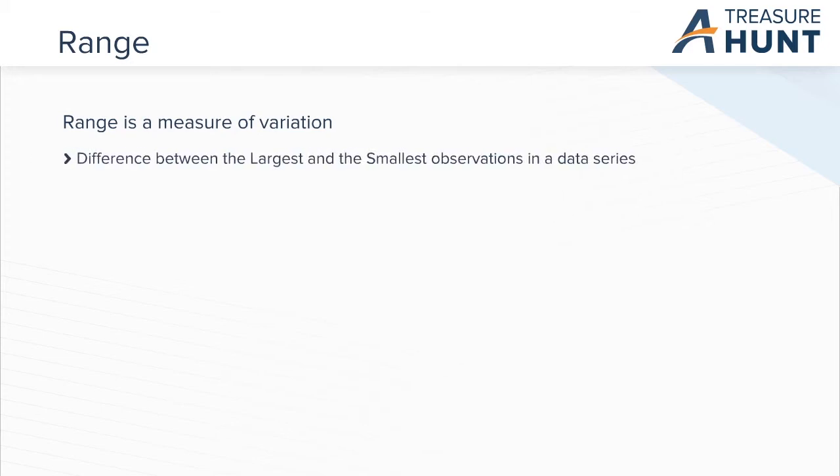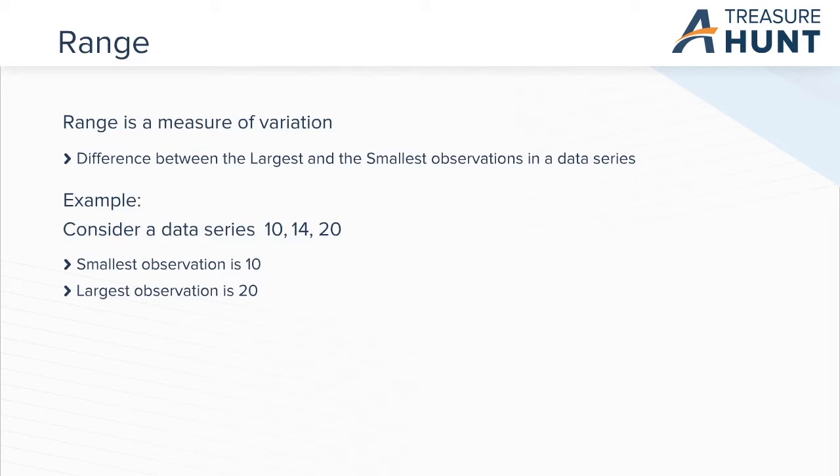Let us first understand the range as a measure of variation. Range is the difference between the largest and the smallest observations. Let us consider an example to understand what range is. In a data series of numbers 10, 14, and 20, the smallest number is 10, and the largest number is 20. So the range is 20 minus 10 equals 10.